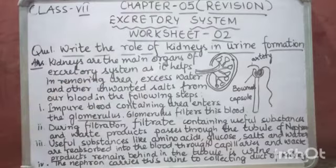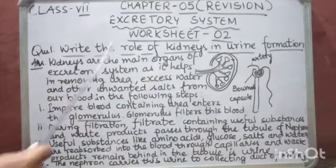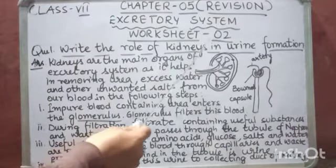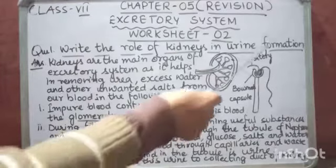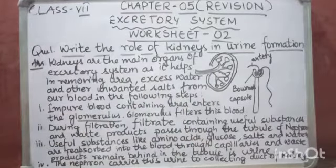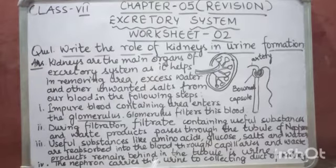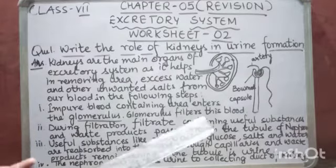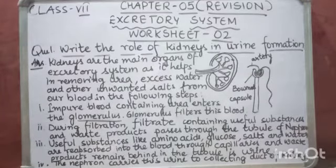We have done Worksheet 1, now we will be doing Worksheet 2. Question number 1 of Worksheet 2 is: write the role of kidneys in urine formation. Now kidneys, they are the excretory organs. They are the main organs of the excretory system, and they help in removing urea and other unwanted salts from the blood.